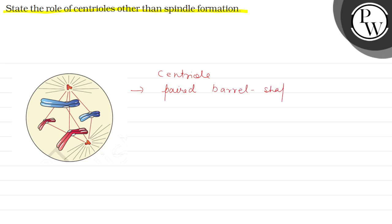This barrel-shaped organelle is present in the cell cytoplasm. Its location in animal cells is in the cytoplasm. Now we are talking about barrel shape - how is the barrel shape?